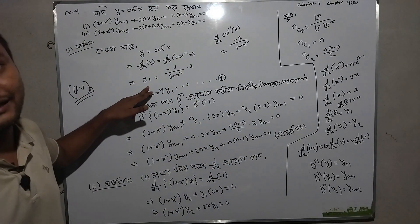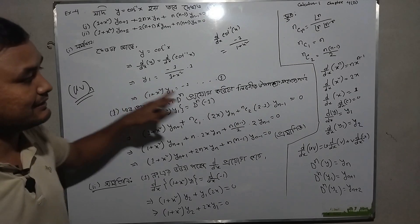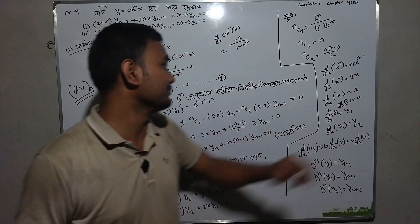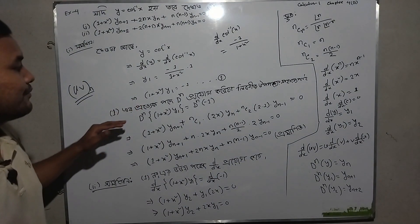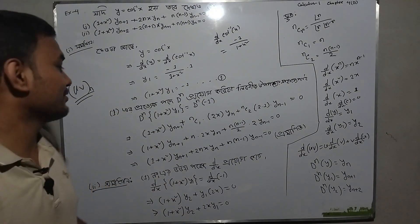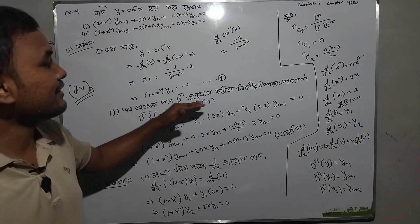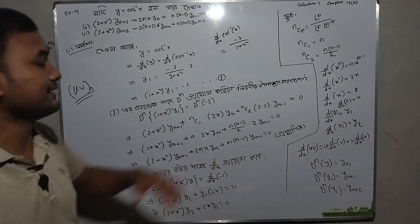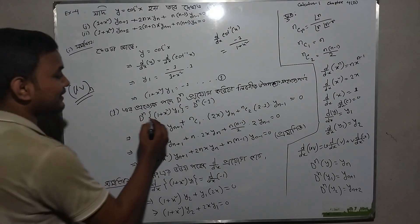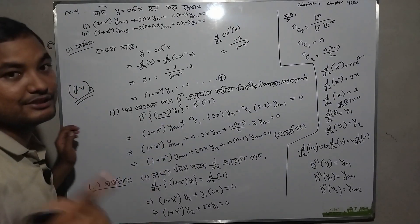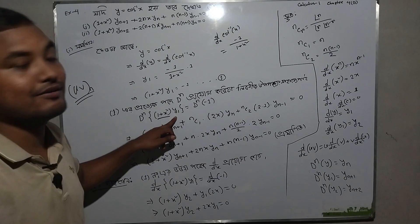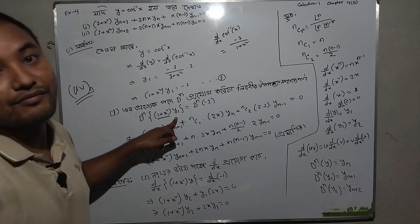So this is dy/dx, where x to the power k is y1. This is the dy/dx function y1. d/dx of y1 is y2. Now what do we do? We apply the operator D power n. D power n of 1 gives D power n. And 1 plus x is equal to y1, applying D power n.